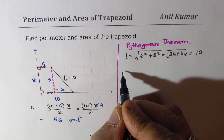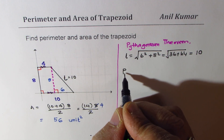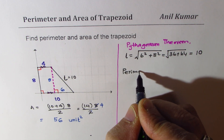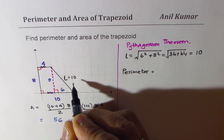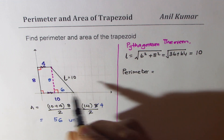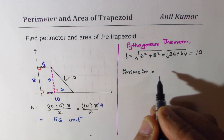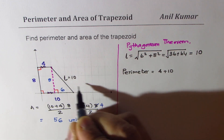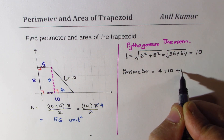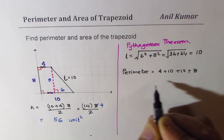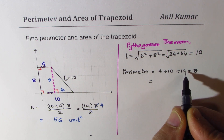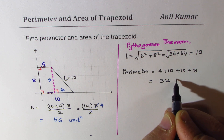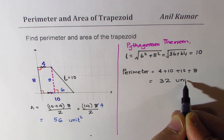Now we can find the perimeter. The perimeter for this trapezoid is equal to the sum of all the external sides: 4 plus 10 plus 10 plus 8, which gives you 24 plus 8, equals 32 units.